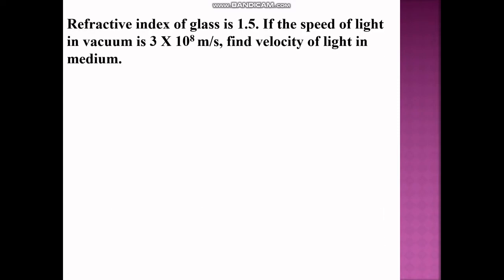The first question: the refractive index of glass is 1.5. If the speed of light in vacuum is 3 × 10⁸ meter per second, find the velocity of light in the medium.